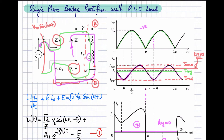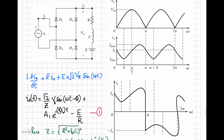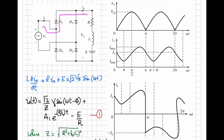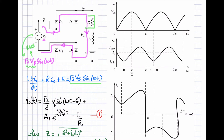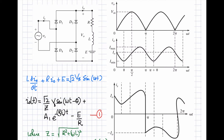Observing the loop when D1 and D2 are on, the supply voltage is √2·Vs·sin(ωt), where Vs is the RMS value. This must equal the sum of voltages across all components: the voltage across the resistance R·I₀, the voltage across the inductance L·dI₀/dt, and the voltage source E. This sets up the differential equation for the circuit.